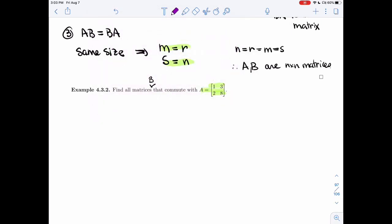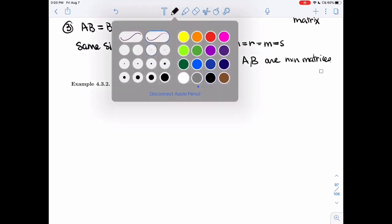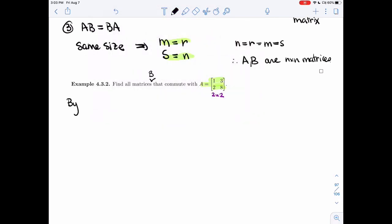But A is a 2 by 2, so B must be a 2 by 2 as well. So by proposition 4.4.1, then B is a 2 by 2.